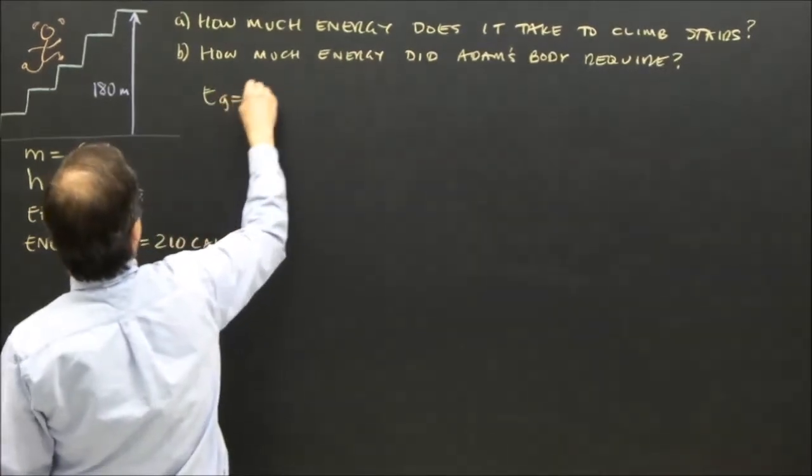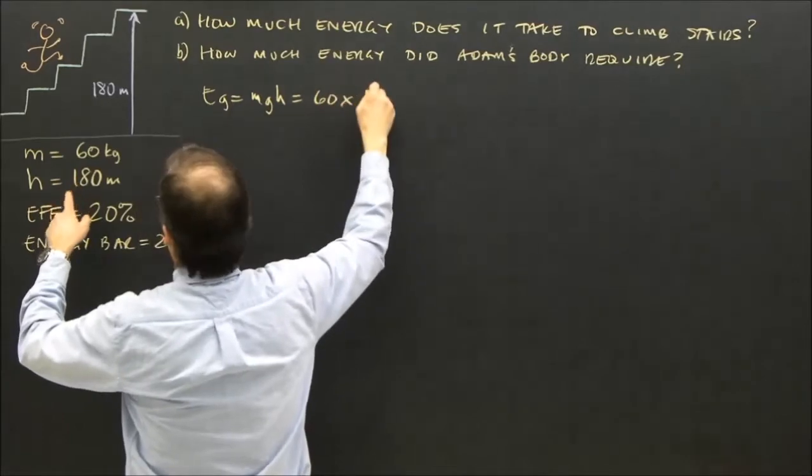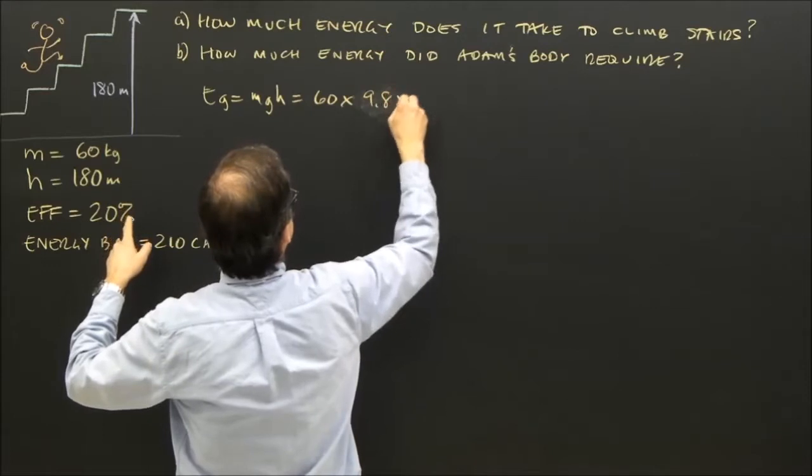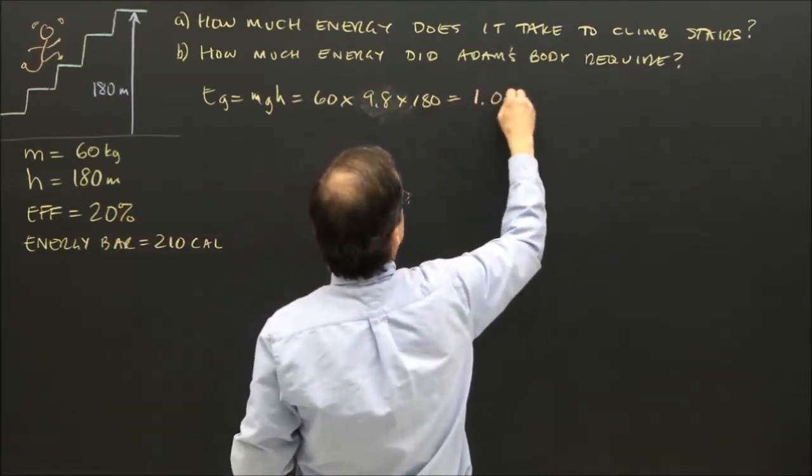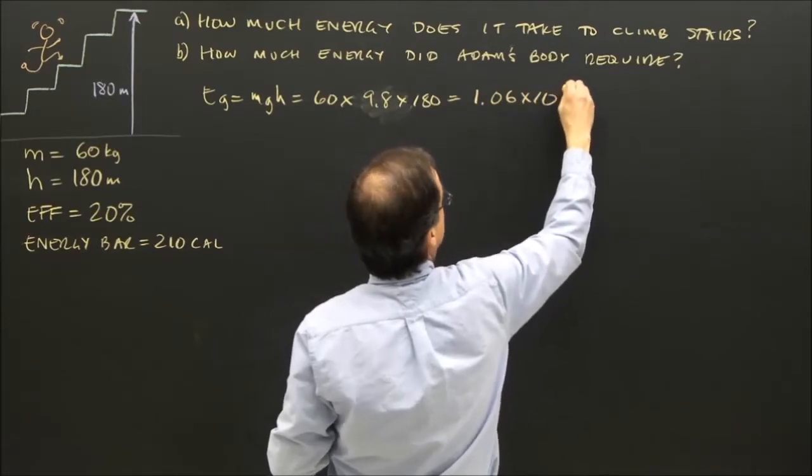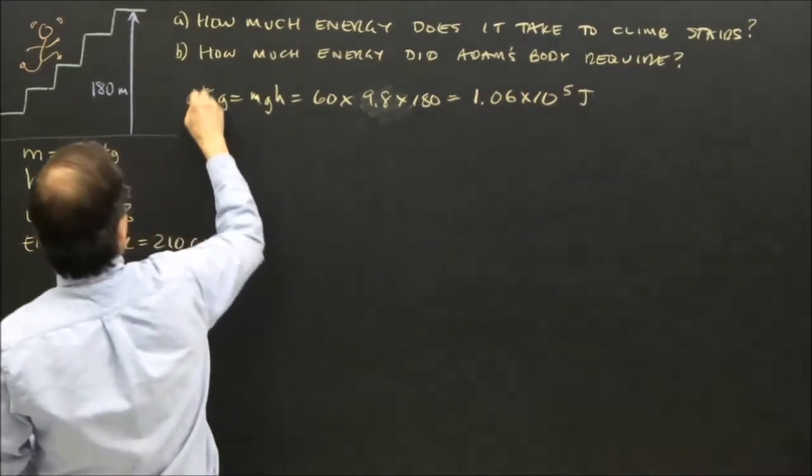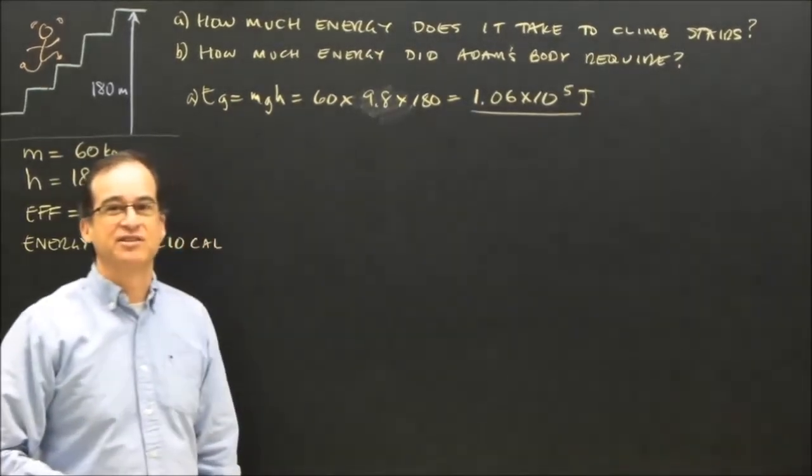Adam's gravitational energy is mgh, 60 times 9.8 times 180 is 1.06 times 10 to the 5 joules. So the answer to A, it took that much energy to climb the stairs. That's how much work he did.